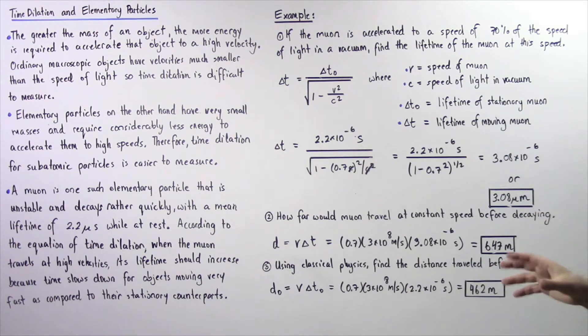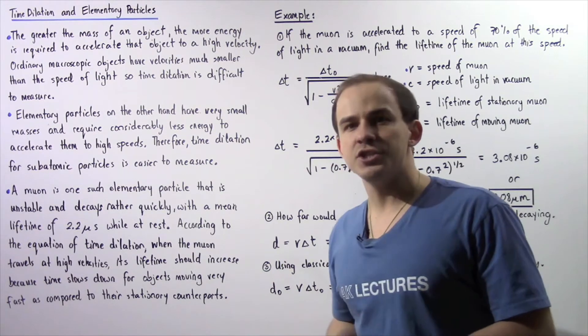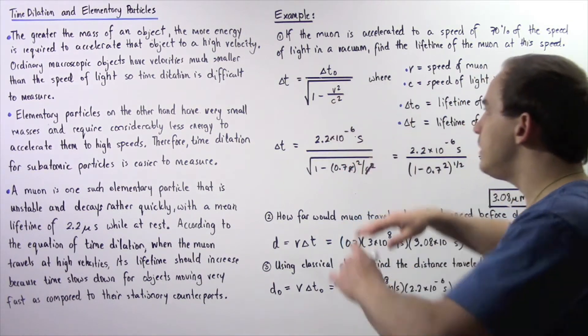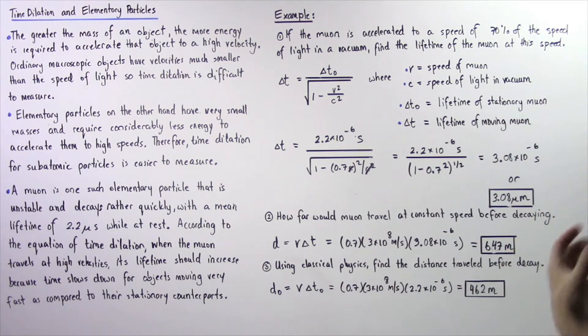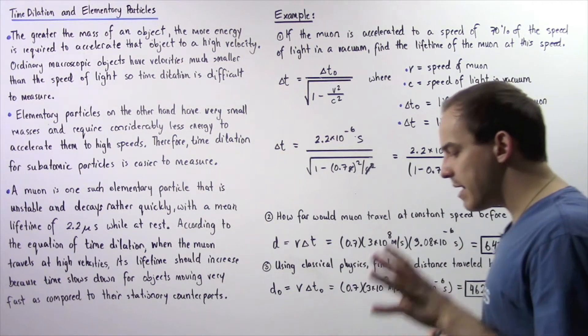If the muon is accelerated to a speed of 70% of the speed of light in a vacuum, find the lifetime of a muon at this particular speed with respect to the stationary counterpart. So we basically want to apply the time dilation equation.